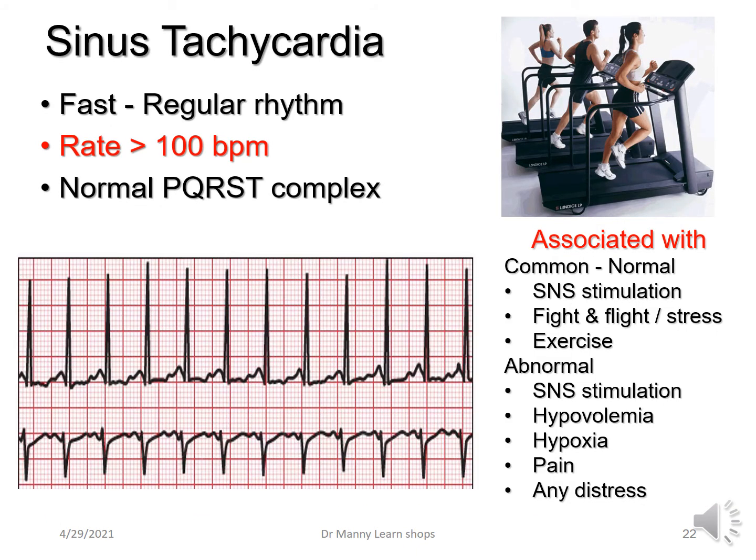Sinus tachycardia is a fast regular rhythm at a rate greater than 100 beats per minute. It also has a normal PQRST complex. It's typically associated with normal sympathetic nervous system stimulation — the fight or flight response — which occurs at all forms of stress. It can be related to exercise, and in abnormal situations: sympathetic nervous system stimulation in hypovolemia, hypoxemia, pain, or any form of distress.